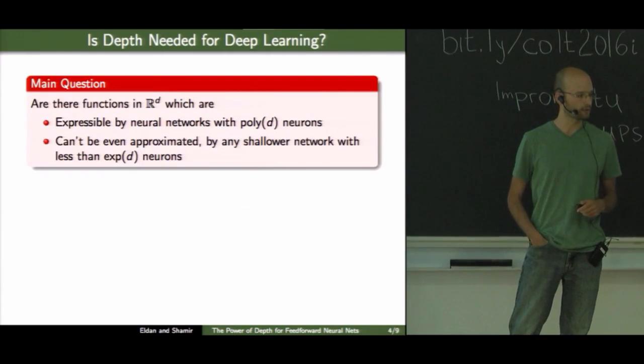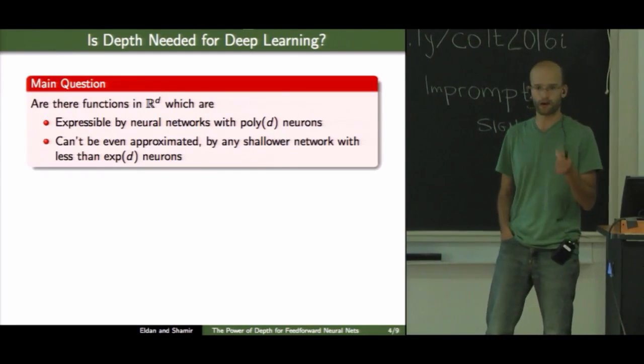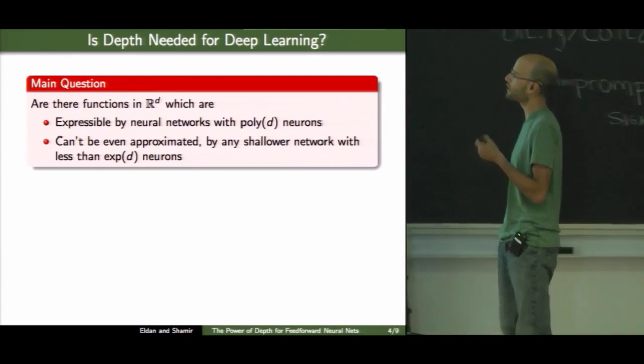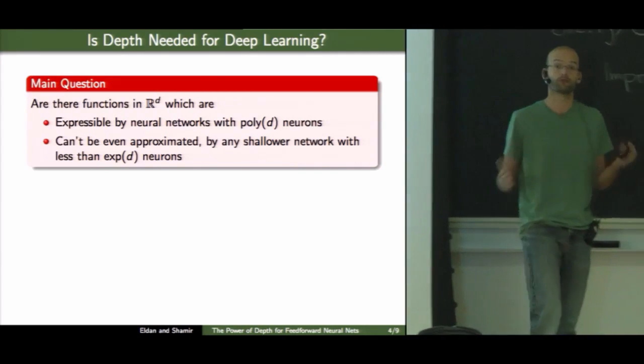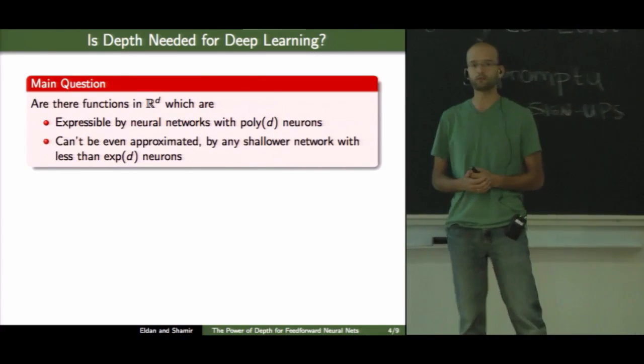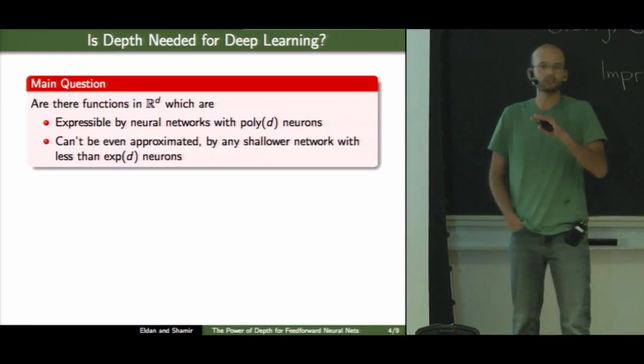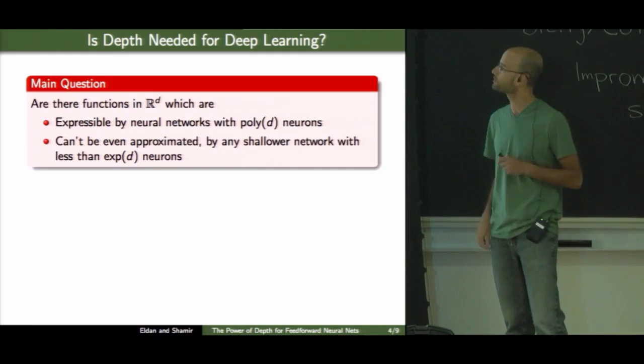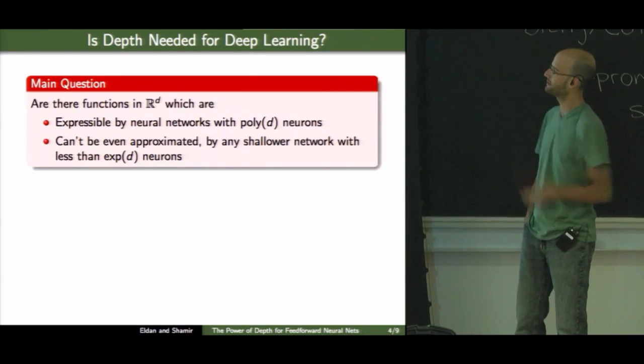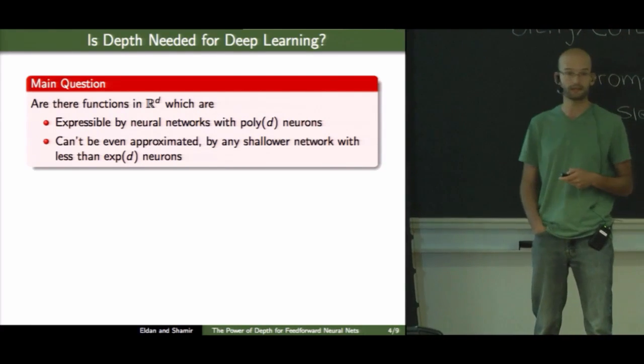The question we're focusing on here formally is whether there are functions in R^d which on one hand can be expressed by a neural network of a reasonable size, polynomial in the dimension. But on the other hand, we cannot even approximate this function by any shallower network, a network with smaller depth, unless you have a huge number of neurons, something exponential in the dimension.